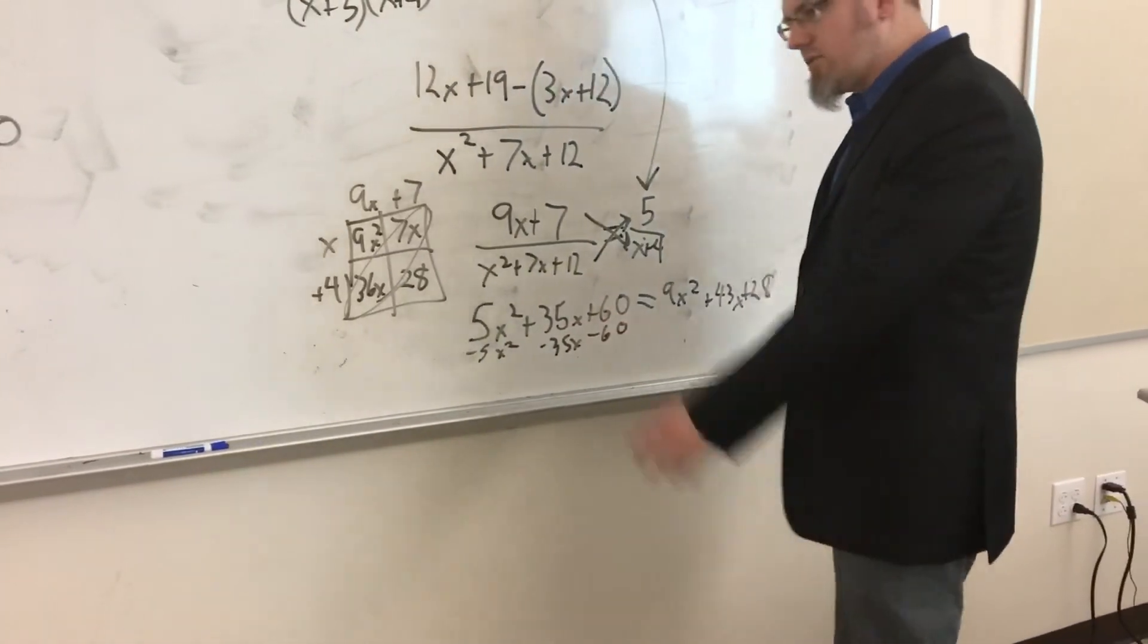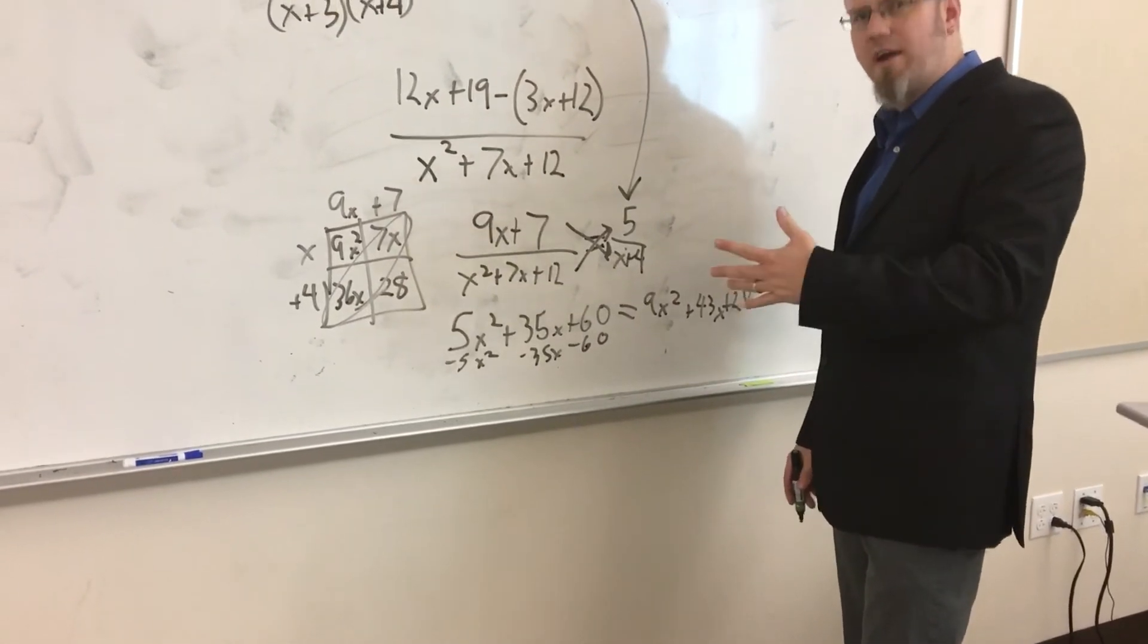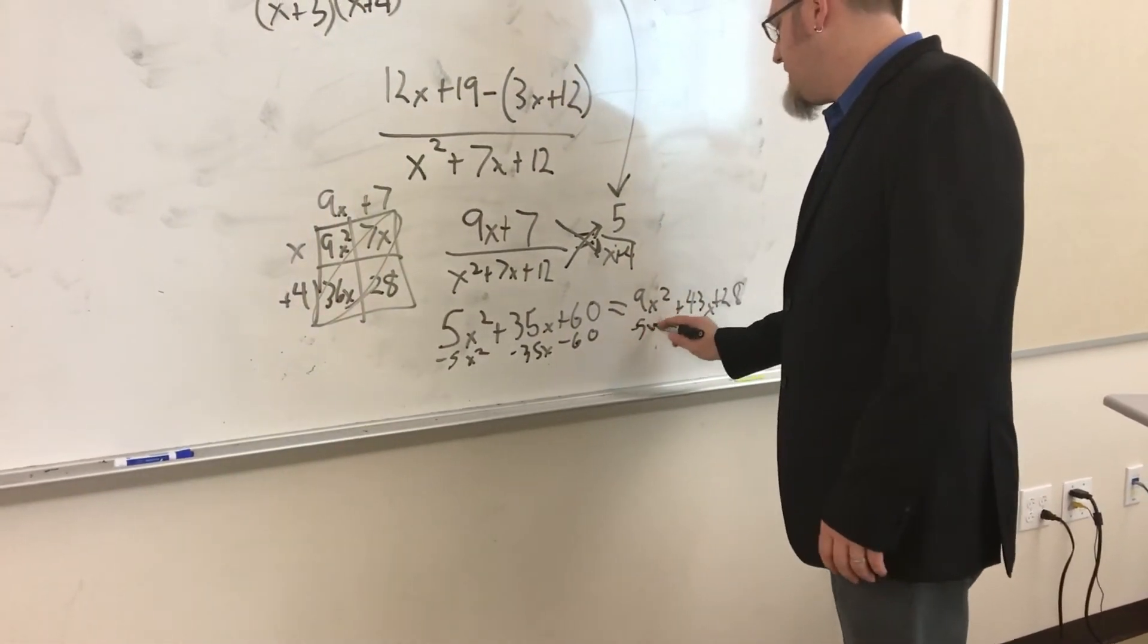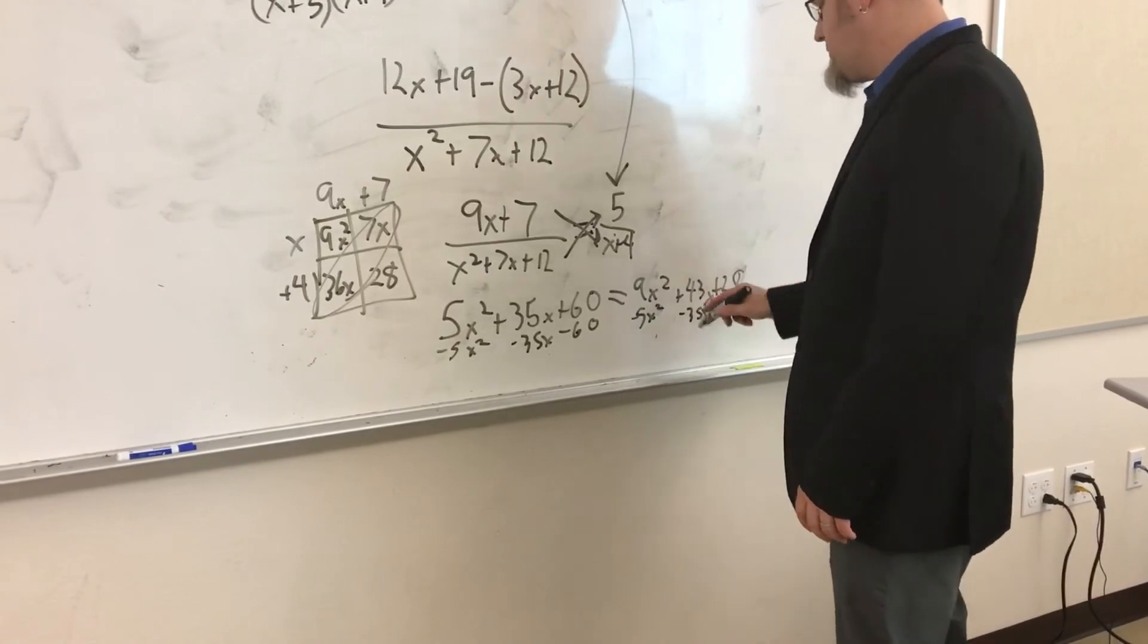It doesn't really make a difference which way you go, but I like for the x squared to be positive. It makes factoring a whole lot easier. So I eliminate this smaller one, and I'm going to subtract the 5x², subtract the 35x, and subtract the 60 from over here.